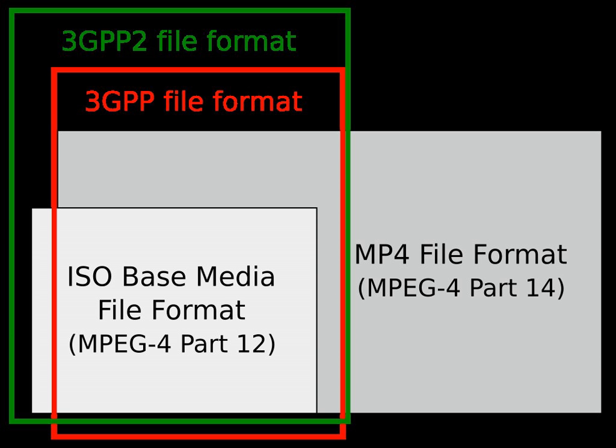In media authored for progressive download, the Movie box, which contains the index of frames, should precede the Movie Data MDAT box.